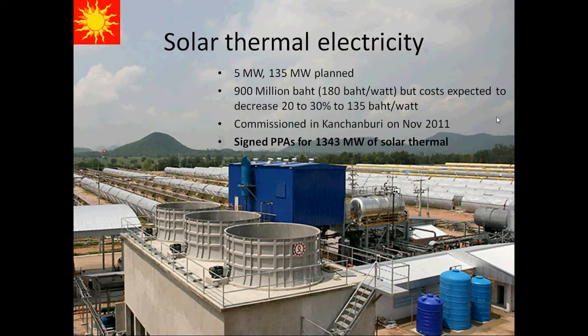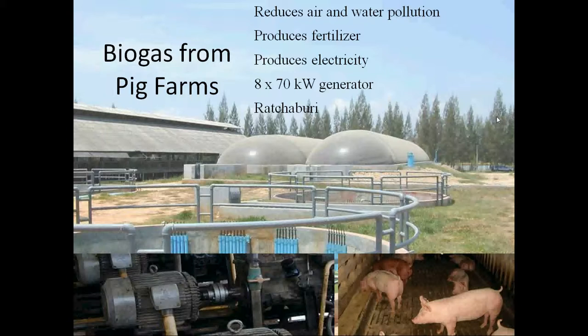Pig farms have been a big one. Prior to the VSPP program, pig farms were a big problem — they smell bad and produce pollution causing problems with local groundwater. These pig farm biomass systems capture the pig waste, make methane with it, and burn the methane in modified diesel generators to produce electricity.